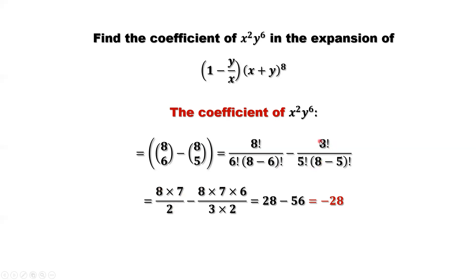Here that's 8!, 5! cancel. We have 8 times 7 times 6. Here's 3!, that's 3 times 2 times 1. Simplify: we have 28 minus 56, which is negative 28. This is the answer.